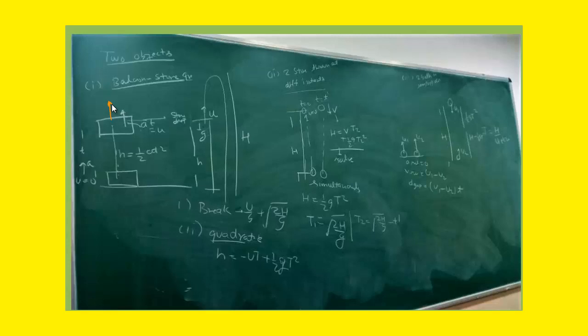This is the important point. Even though the word 'dropped' is used, the stone's initial velocity is not zero. The stone acquires the balloon's velocity at that moment. You must separate the balloon's motion from the stone's motion.